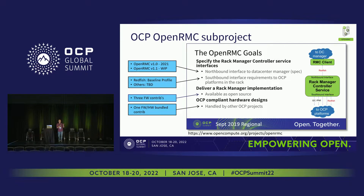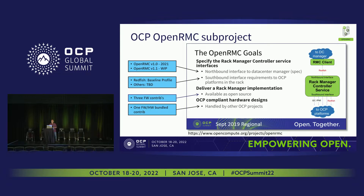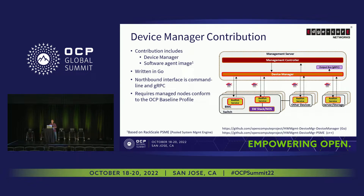The CTO of OCP did not want this to occur at the next level of manageability, which was at the Rack Management. So he initiated this sub-project and said, see if we can consolidate source code early before it gets fragmented, and then we'll have to spend a whole lot of time bringing it all back together again. So that's what we initiated, and we started defining the northbound interface.